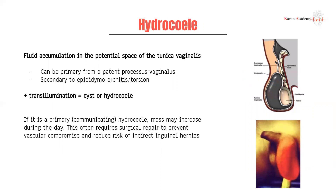Next, we have hydrocele. This space — the tunica vaginalis — is meant to be a collapsed space. The processus vaginalis should have closed into the tunica vaginalis. If you have a patent tunica vaginalis where the connection is still intact, that can lead to a communicating hydrocele, where there's free flow of fluid between the abdominal cavity and the tunica vaginalis. You can also have normal anatomy with the processus vaginalis closed, but fluid accumulates in the tunica vaginalis — this fluid would have come from the testes themselves.